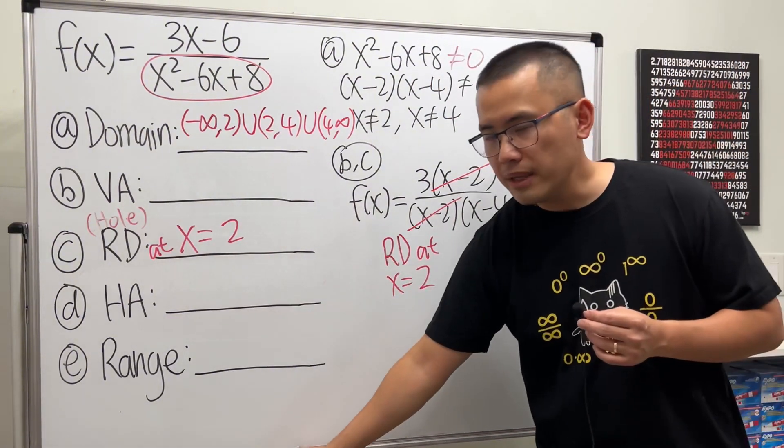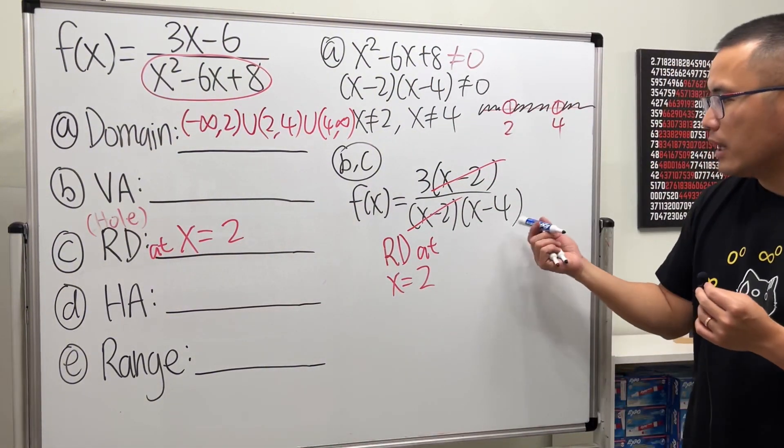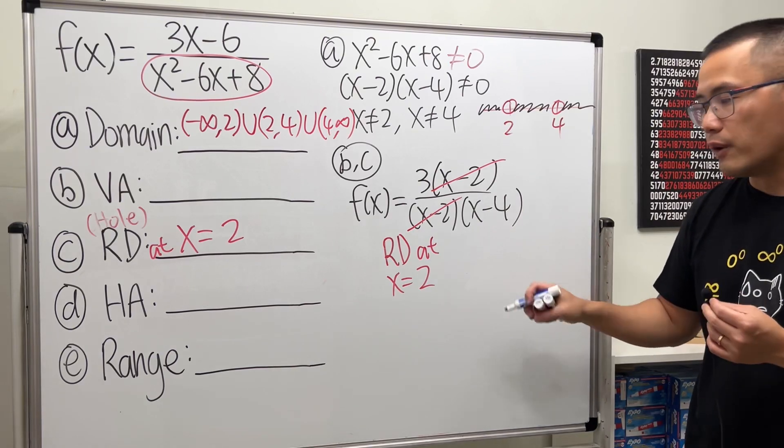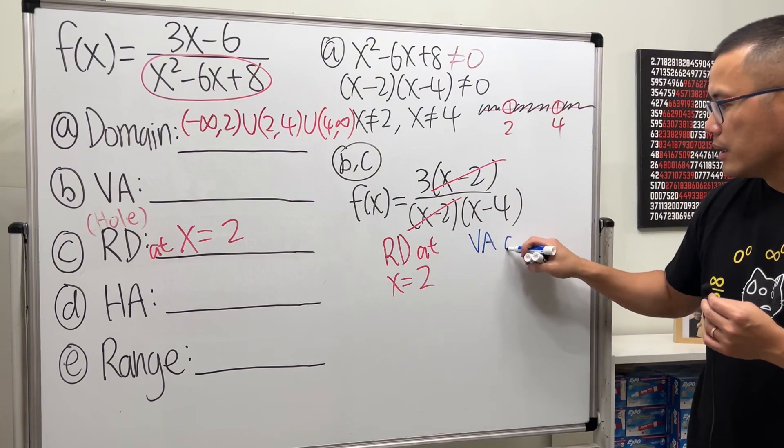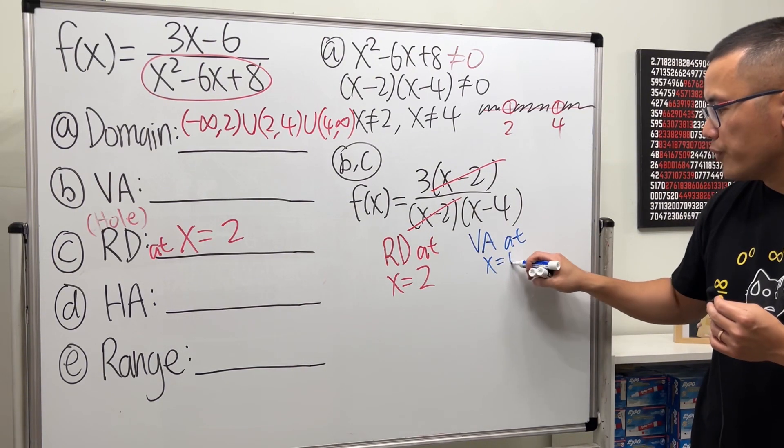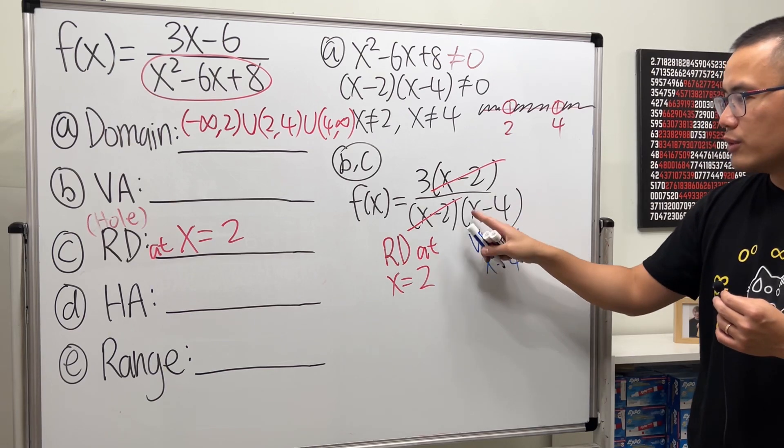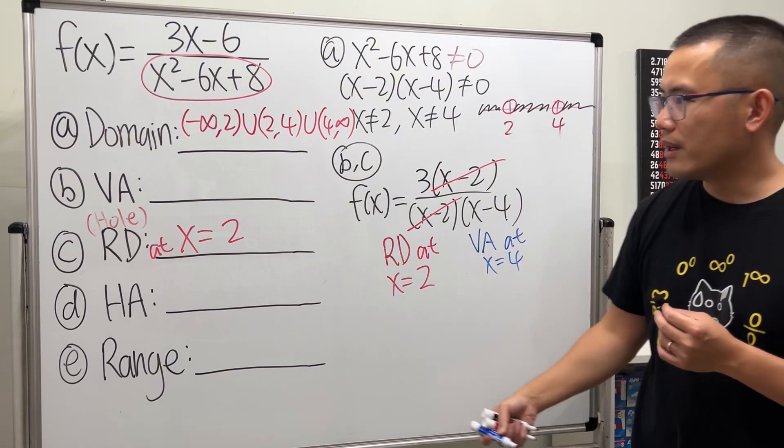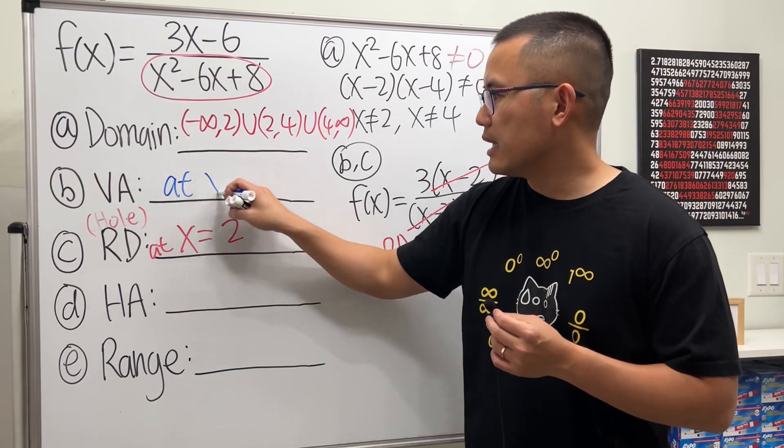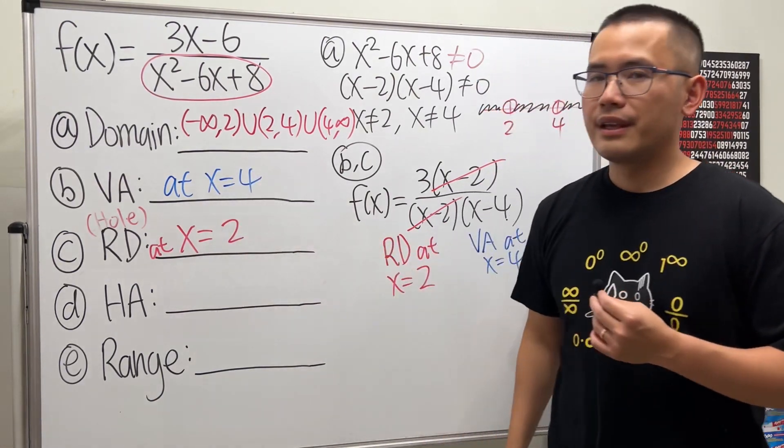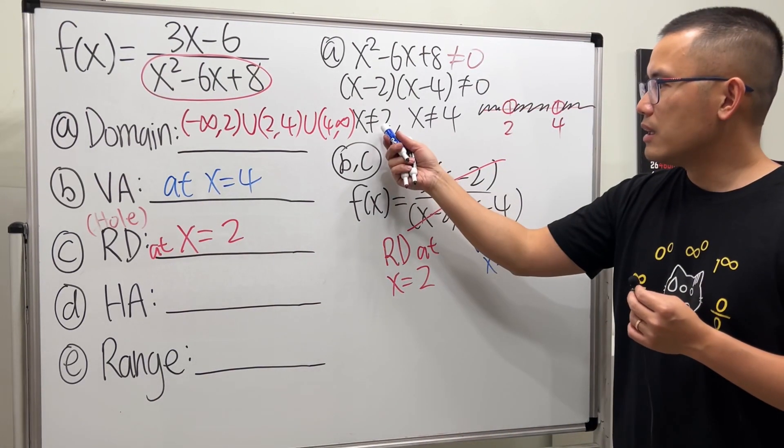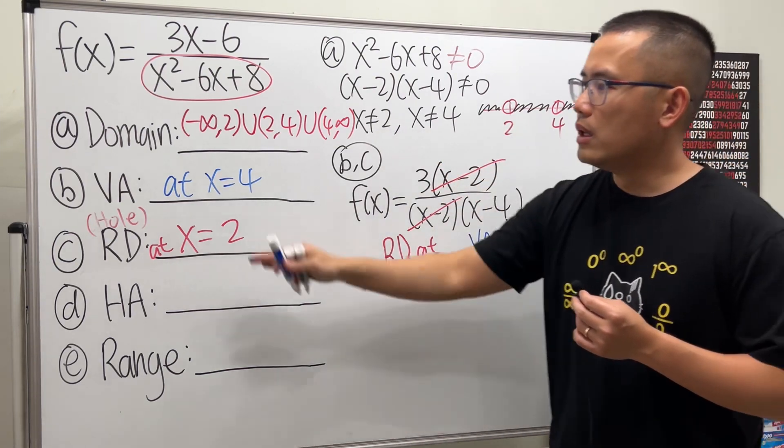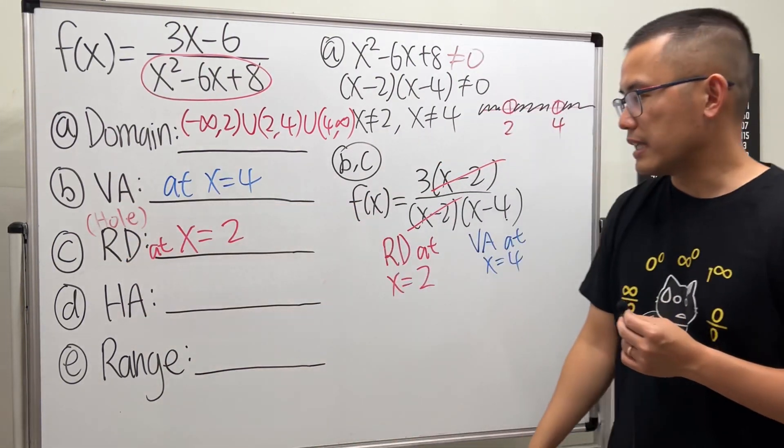And then the remaining one, the one that's still on the bottom, this right here will give you the vertical asymptote at x equal to 4. You do the opposite, so you have to think about how to make this equal to 0. So that's why it's 4. So at x = 4. As you can see, earlier for these two numbers, they are the candidates for VA and RD. Just like that.